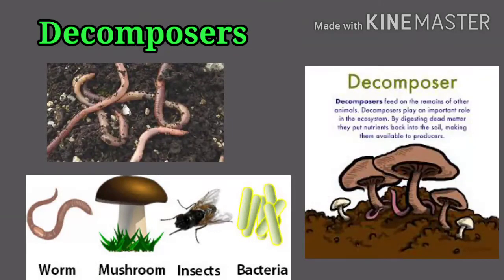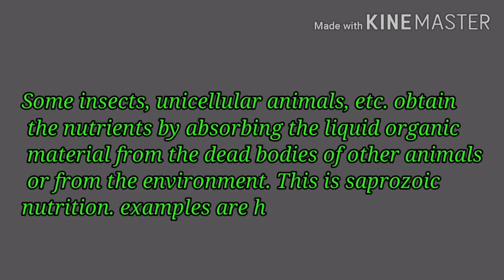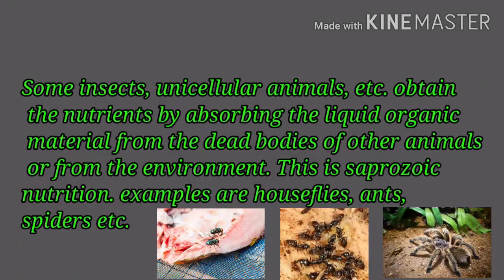Decomposers are microbes which obtain their food by decomposing the dead bodies of organisms or other materials. Some insects, unicellular animals, etc. obtain nutrients by absorbing liquid organic material from the dead bodies of other animals or from the environment. This is called saprozoic nutrition. Examples include house flies, ants, spiders, etc.